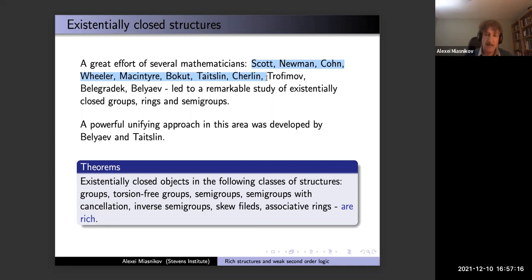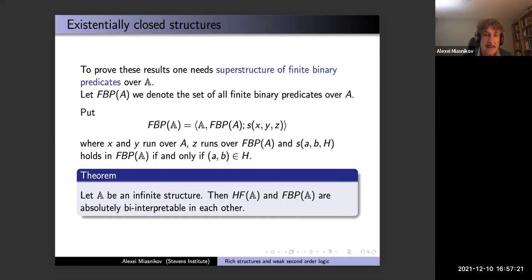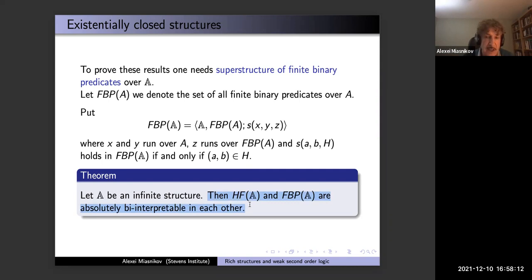How did they do that? They used yet another approach to weak second-order logic. Given a structure A, consider the set FBP(A) of all finite binary predicates over A, with a predicate S(h, a, b) saying pair (a,b) belongs to the finite predicate h. It's not difficult to show that HF(A) and FBP(A) are bi-interpretable in each other — absolutely, without any constants. So this superstructure gives the same second-order logic.